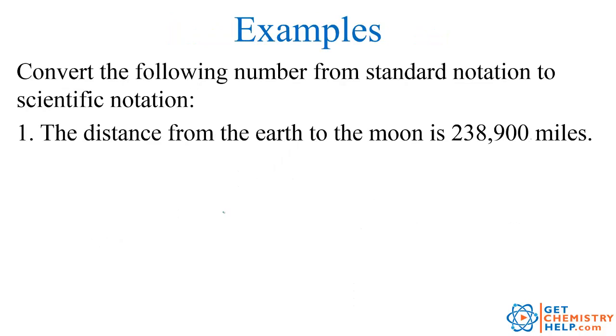We're going to take standard notation, or what's also called decimal notation sometimes, and convert it into scientific notation. Number 1 says, the distance from the Earth to the Moon is 238,900 miles. First off, which of these digits are significant? Zeros on the end are never significant unless there's a decimal, and there isn't.